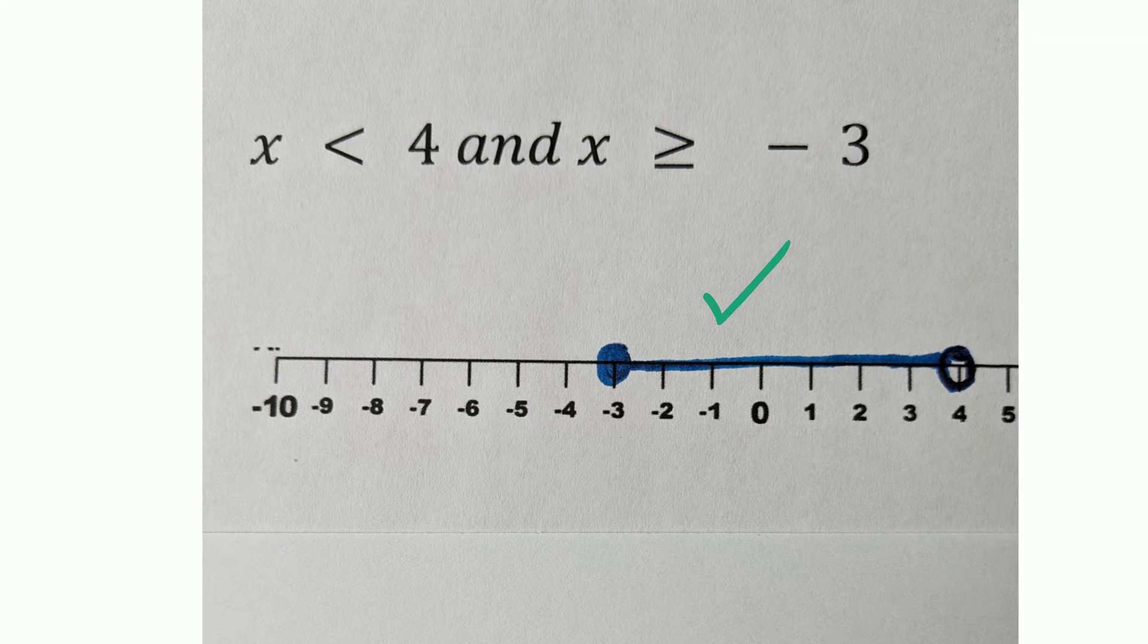And so if you locate the intersection where the two overlap, this means that any number between negative 3 and 4, including negative 3 because notice that it is closed, would satisfy the solution.